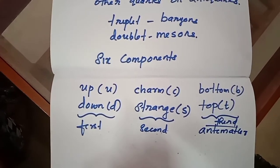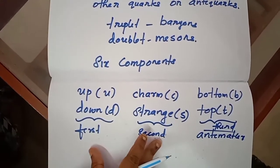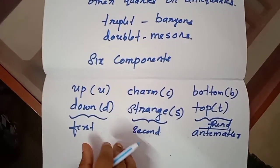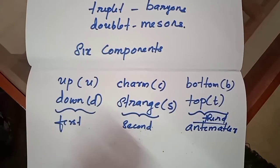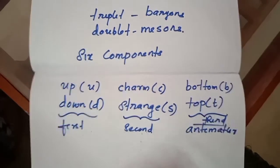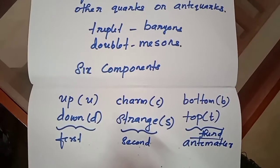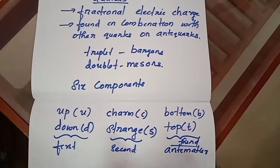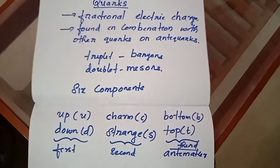Each quark has an antimatter counterpart called an anti-quark, of opposite charge, opposite baryon number, and opposite strangeness number. The six flavors of quarks together with the six leptons can be called truly elementary in nature.